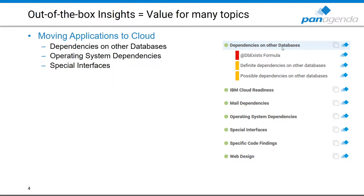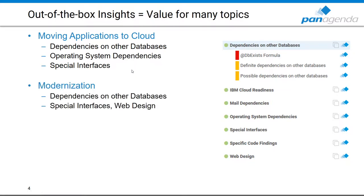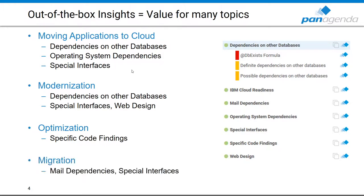For example, when moving applications to the cloud you may want to look at insights in the rule sets for dependencies on other databases, operating system dependencies, and special interfaces. When modernizing applications, look at dependencies on other databases, special interfaces, and the web design rule set. For optimization, examine all insights in the specific code findings rule set. For migration, focus on mail dependencies and special interfaces. These are just a few examples — explore further and you'll find great value from what Application Insights provides out of the box.